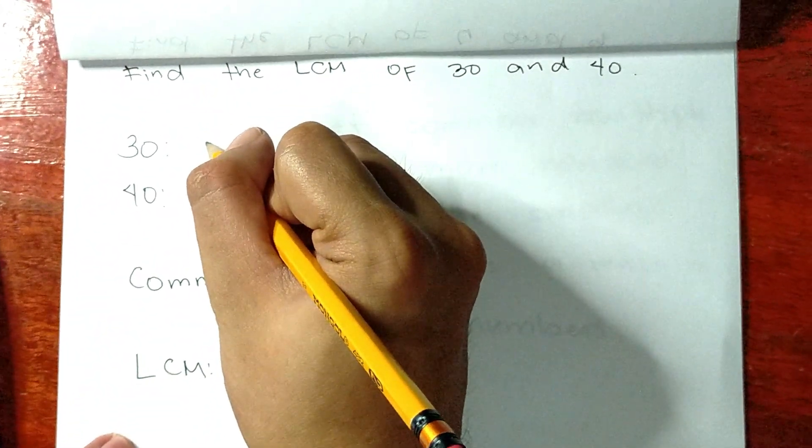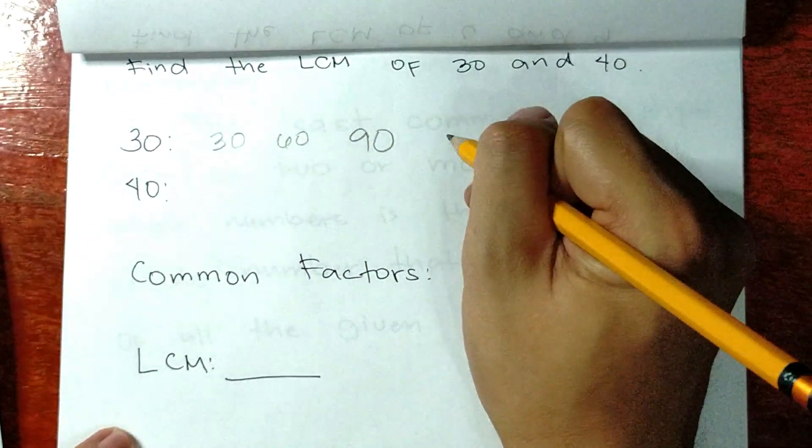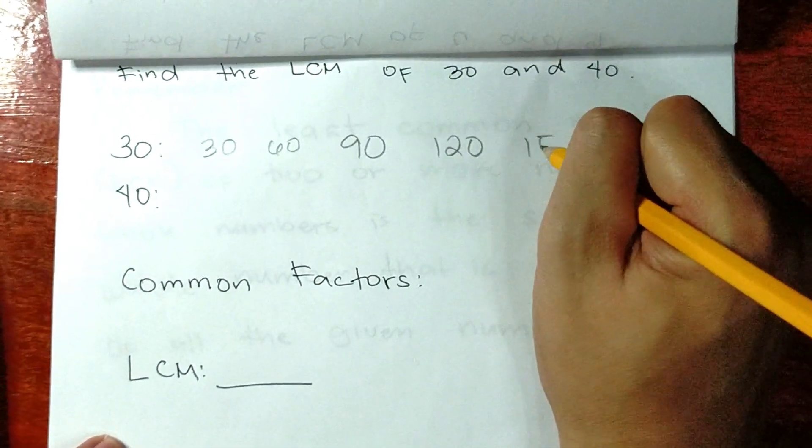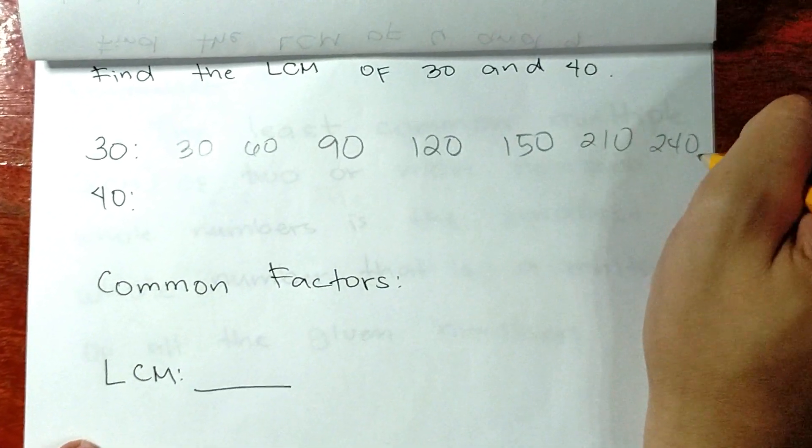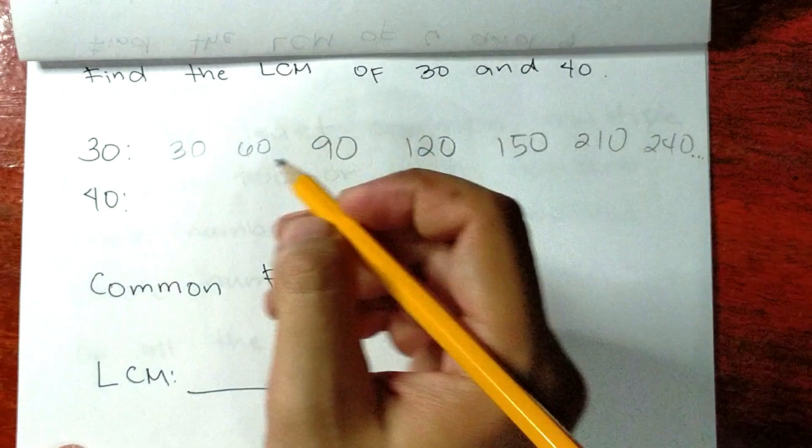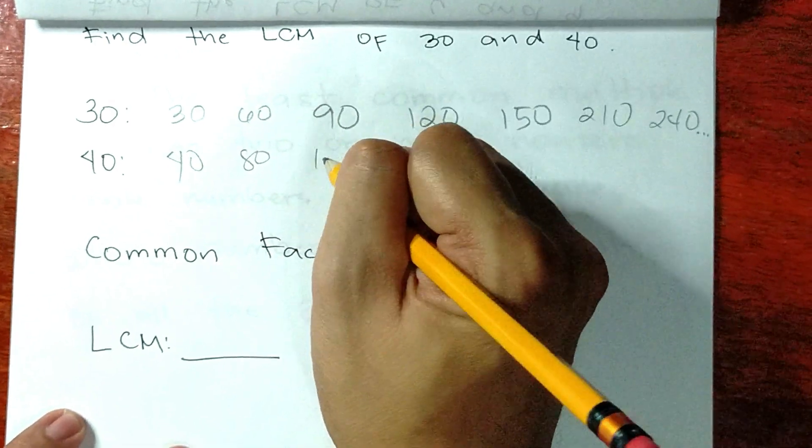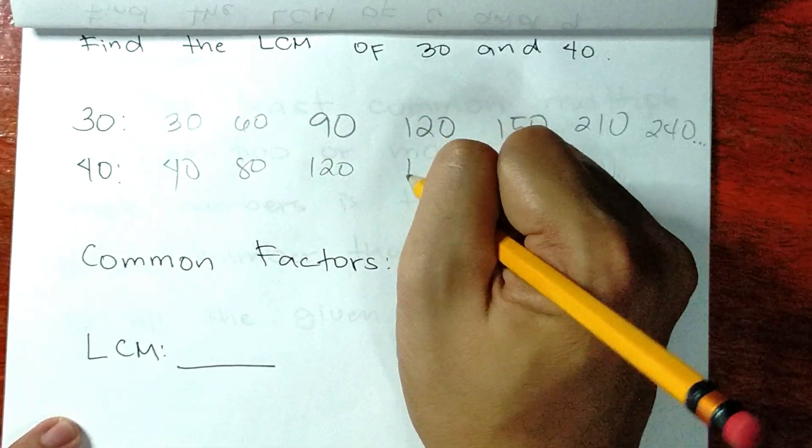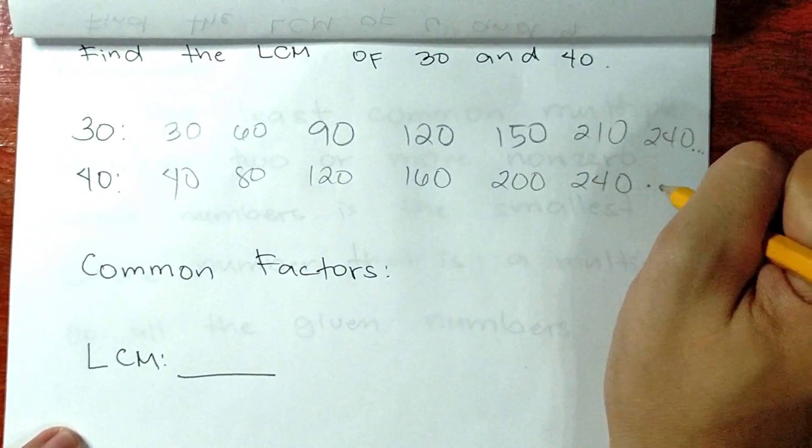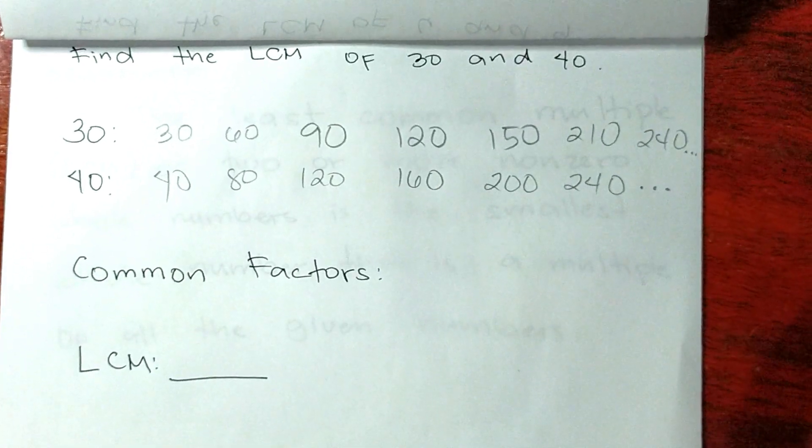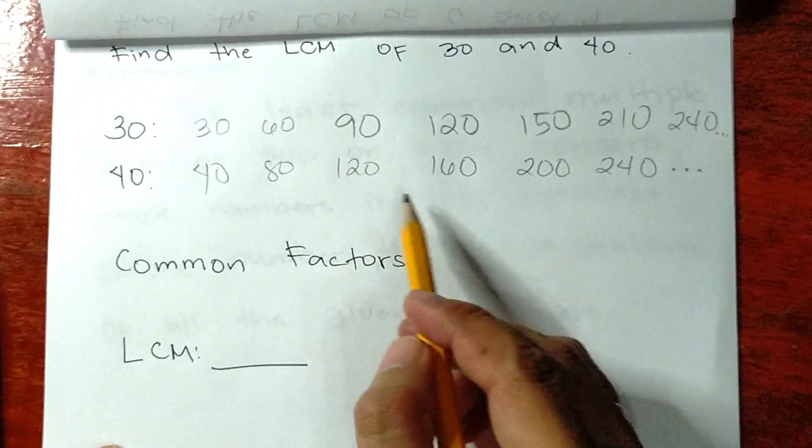Let's find the multiples of 30 and 40. Let's start with 30: 30, 60, 90, 120, 150, 210, 240 and so on. Next number 40: 40, 80, 120, 160, 200, 240 and so on. So what are the common factors of 30 and 40? We have 120 and 240.